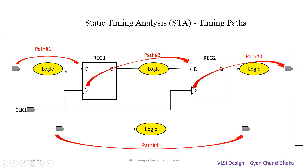The first path the STA tool considers for analysis is from the input pin of the design to the data pin of the sequential element. The second path is from the clock pin of a sequential element to the data pin of the next sequential element. The third path is from the clock pin of the sequential element to the output pin of the design. The fourth path is from the input pin to the output pin — there may be some combinational logic between input and output, and the STA tool will consider that path as well.